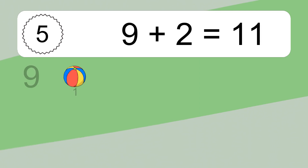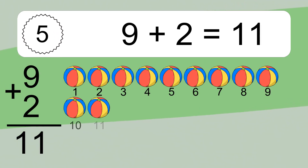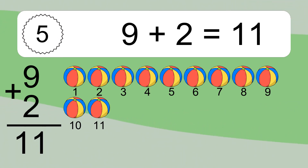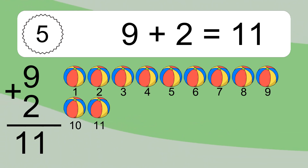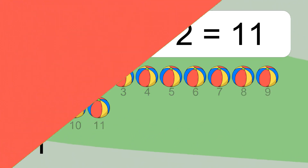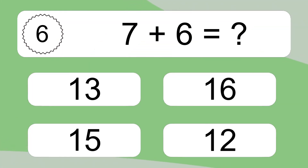9 plus 2 equals what? 9 plus 2 equals 11. Let's count it: 1, 2, 3, 4, 5, 6, 7, 8, 9, 10, 11.